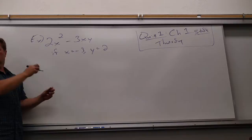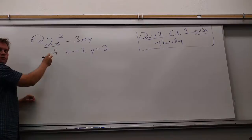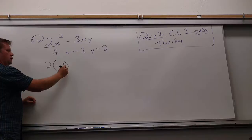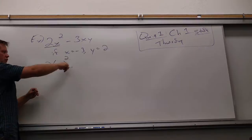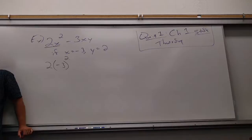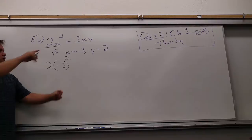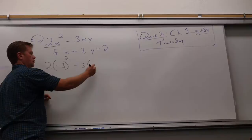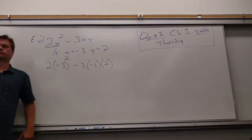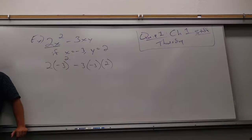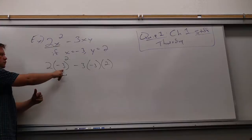Help me out — how do I start this problem off? So I just took the X and replaced it. Why do I put parentheses? To make sure I remember it's multiplication. If I didn't, it would look like subtraction. So how about over here — minus 3. You have to be careful about it so you preserve all the operations. So what do I do first now? Order of operations — exponents. So what's negative 3 squared?